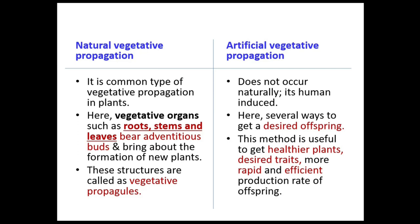For example, suppose we have two plants — one producing very large fruit and another producing very tasty fruit. We can combine these two characters to get big and tasty fruits. This is why artificial vegetative propagation is so important: we get healthier, desired plants with better quality, and it enables more rapid and efficient production of offspring.